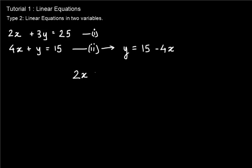So substituting in equation number one we get 2x plus 3 into the value of y, which is 15 minus 4x, equal to 25. So if you notice it carefully, this is reduced to type number one. We have only one variable. So going ahead, 2x plus 3 into 15 is 45, 3 into minus 4x is minus 12x equal to 25.